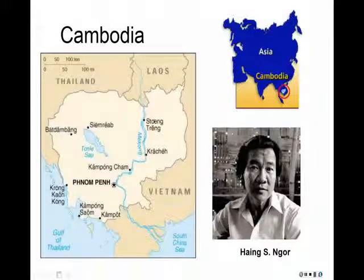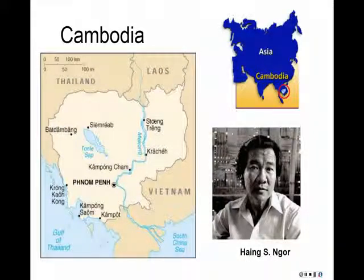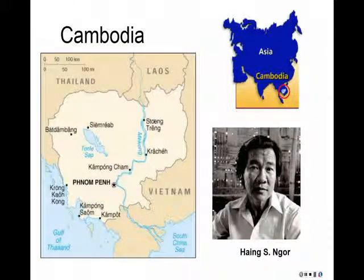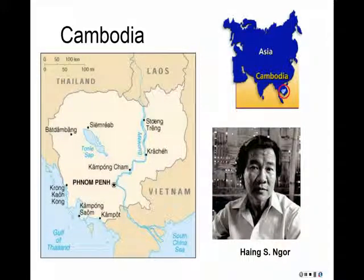I want to focus on one type of genocide in particular and the torture that took place in Cambodia. This relates to the reading in the excerpt about Journey to Freedom by Heng Nyor, which was originally in the Reader's Digest and eventually became the basis of the movie The Killing Fields.